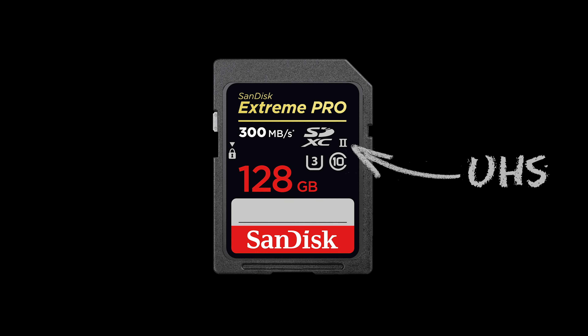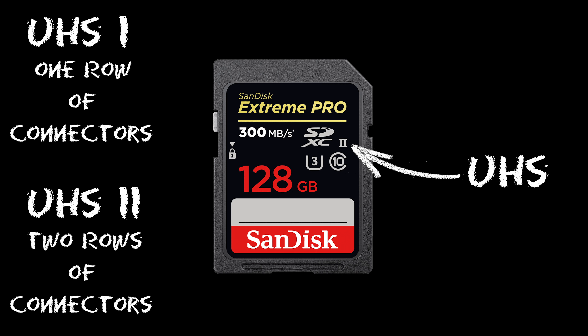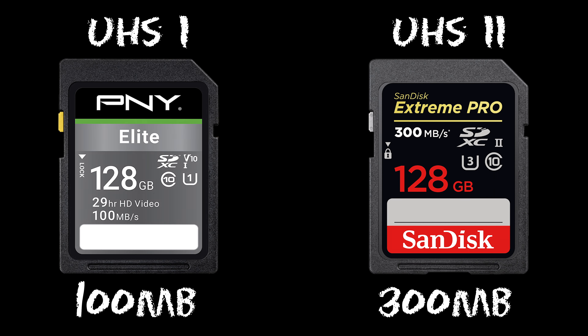If you want to play games, go with A2 for a better experience. The last one is the UHS standard with two levels: I1 and I2, also indicated by the number of rows of connectors on the back. If you look at the maximum speed, you will notice a huge difference, although not all devices support UHS Express 2, so check the compatibility of your device before you buy it.